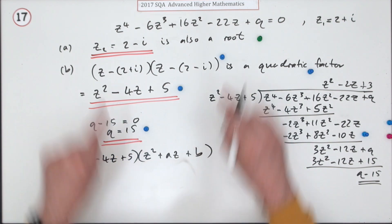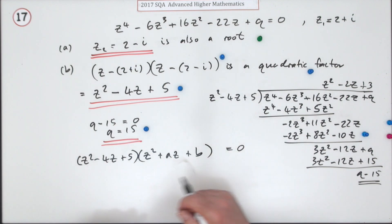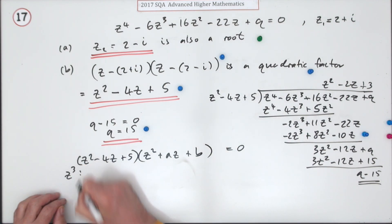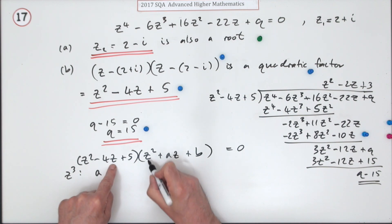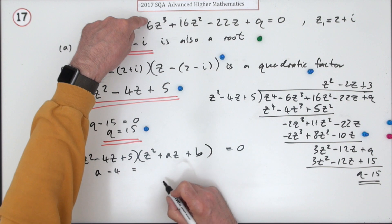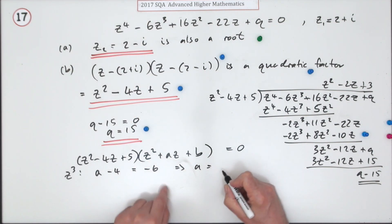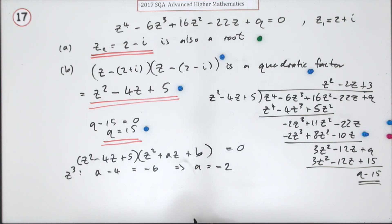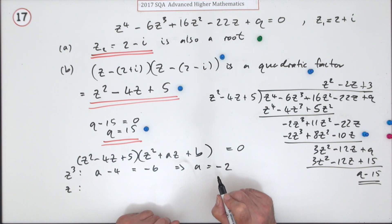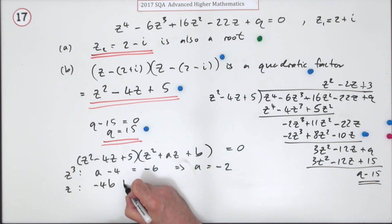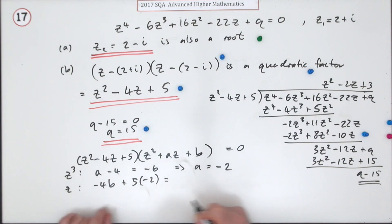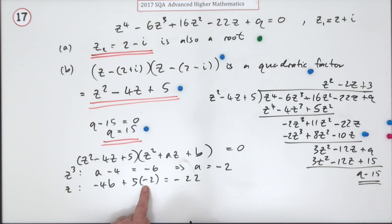The factor is (z²+az+b). Equating coefficients with the original polynomial: for z³ terms, a + (−4) = −6, so a = −2. For the z term: (−4)b + 5a = −22; substituting a=−2 gives −4b−10=−22, so −4b=−12, meaning b=3. So the other quadratic factor is z²−2z+3.